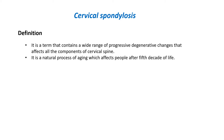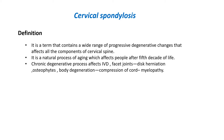Cervical spondylosis mainly affects people in their fifth decade. The chronic degenerative process first affects the intervertebral discs, then the facet joints, which leads to disc herniation and osteophyte formation, spinal body degeneration, and compression of the spinal cord, leading to compressive myelopathy of the cervical spine.